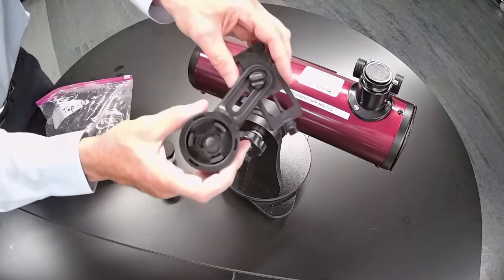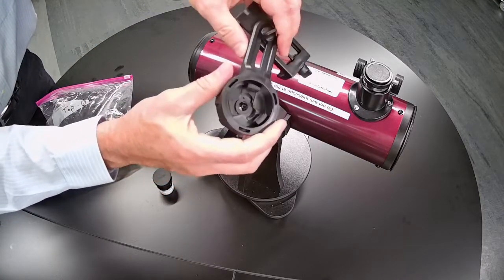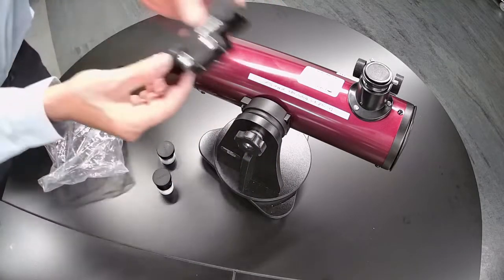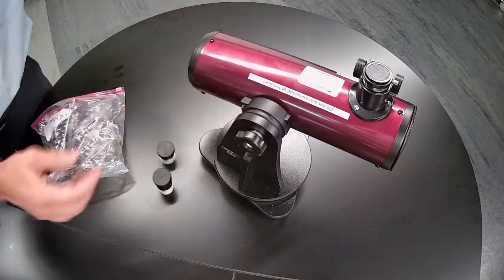There is an adapter that will allow you to attach a cell phone to the telescope so you can take pictures. And there is an aiming device, a red dot finder we call it.